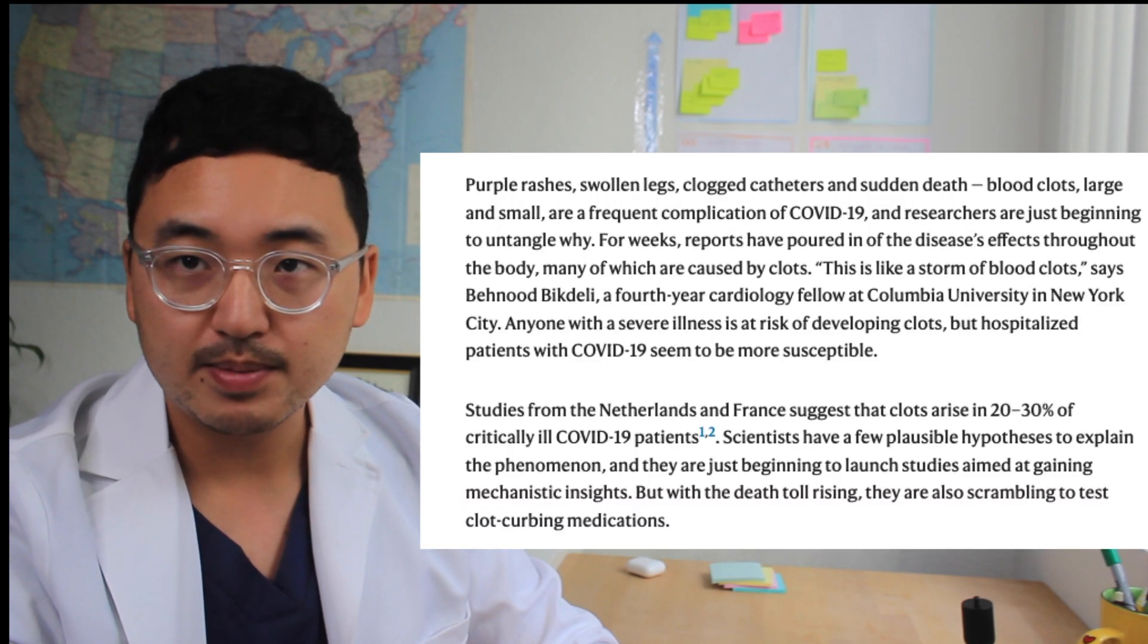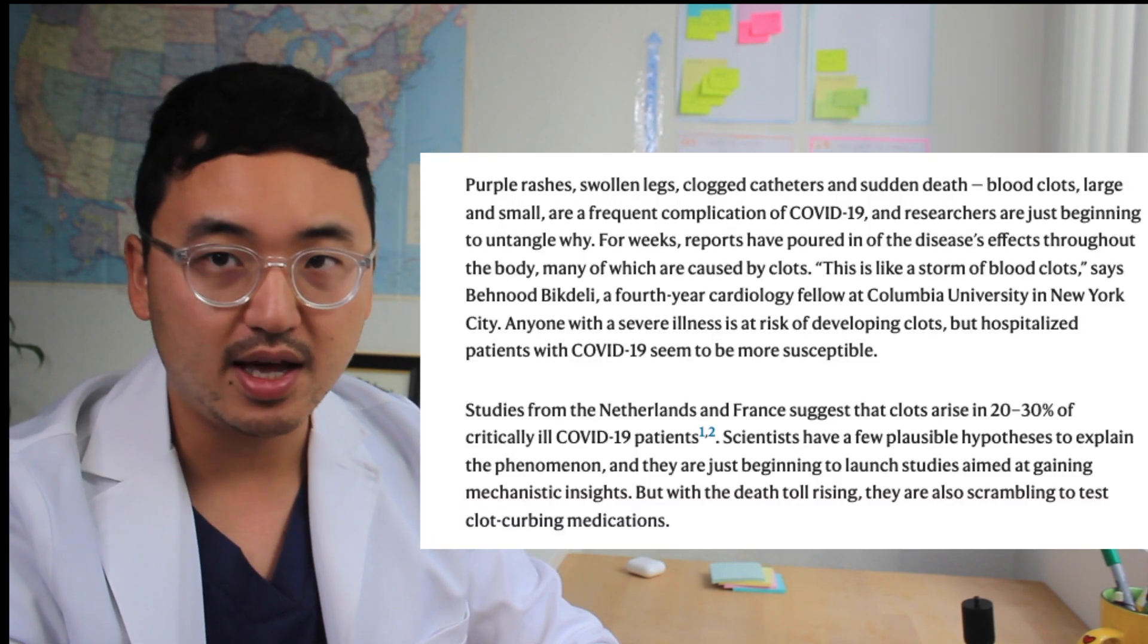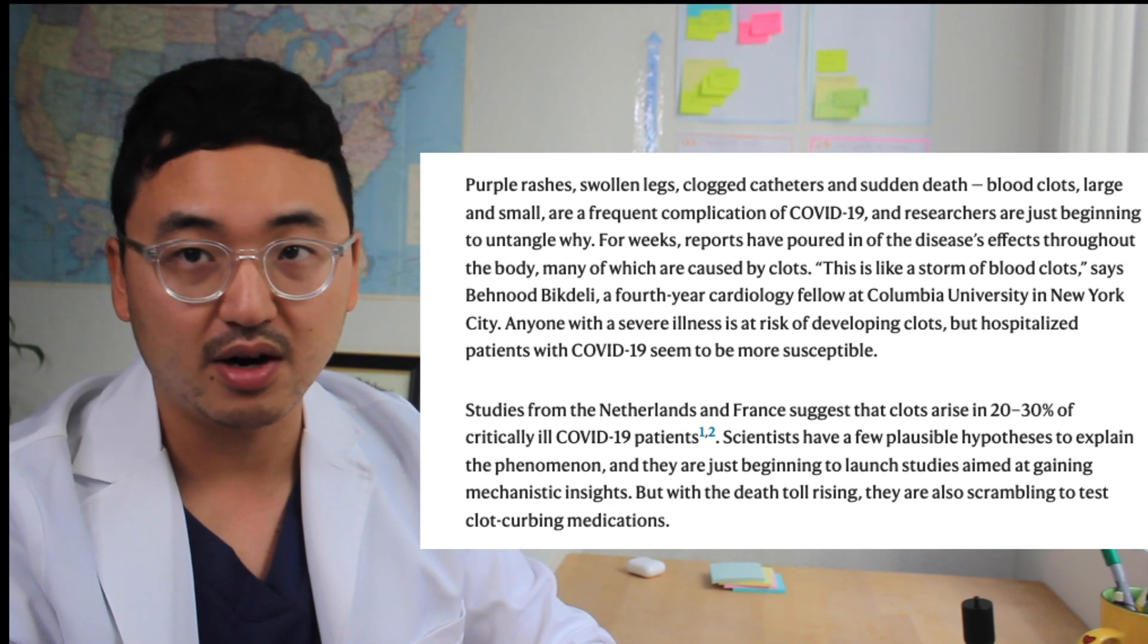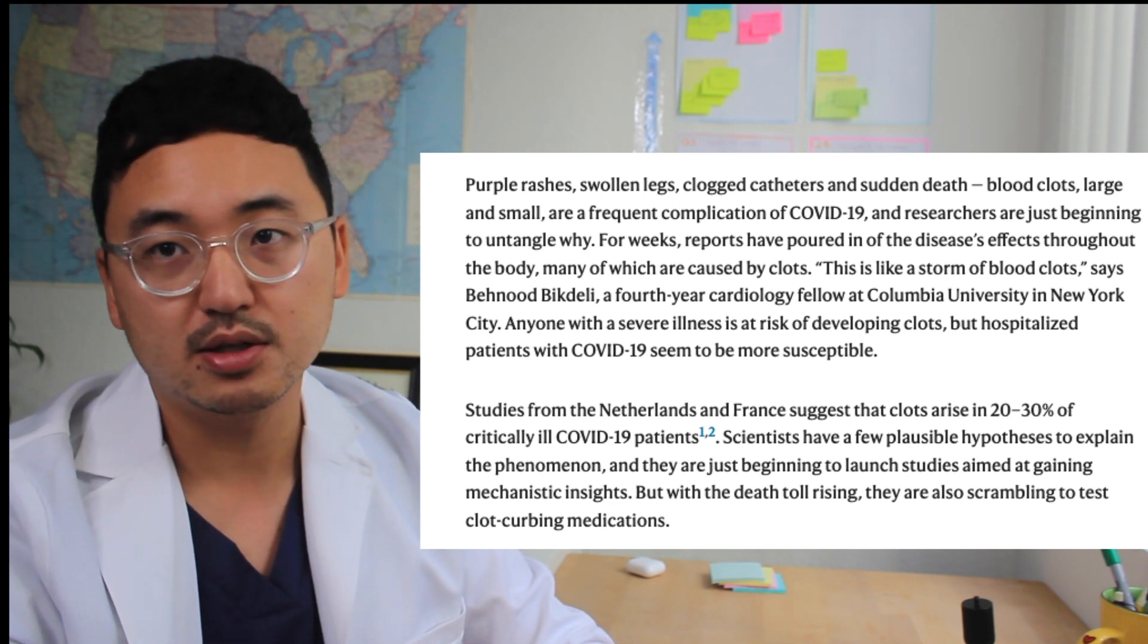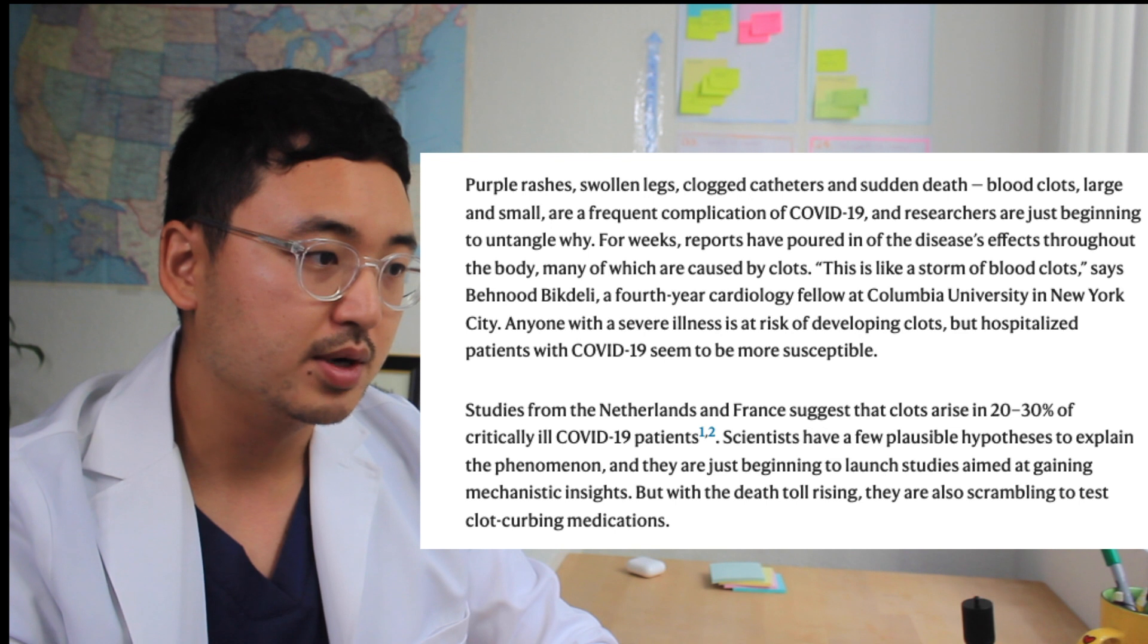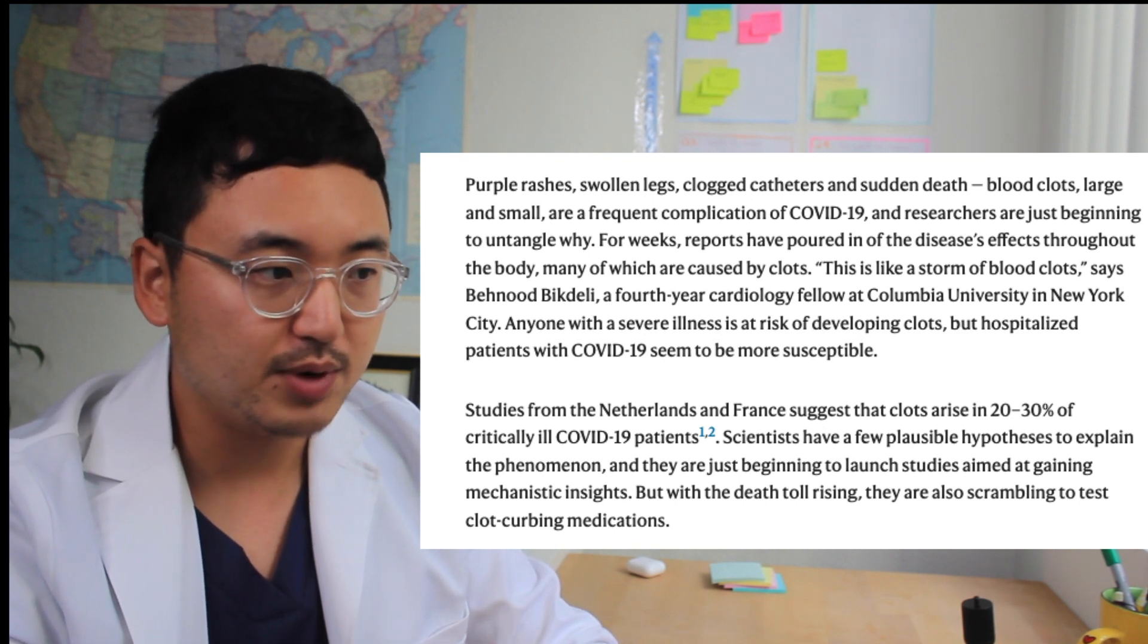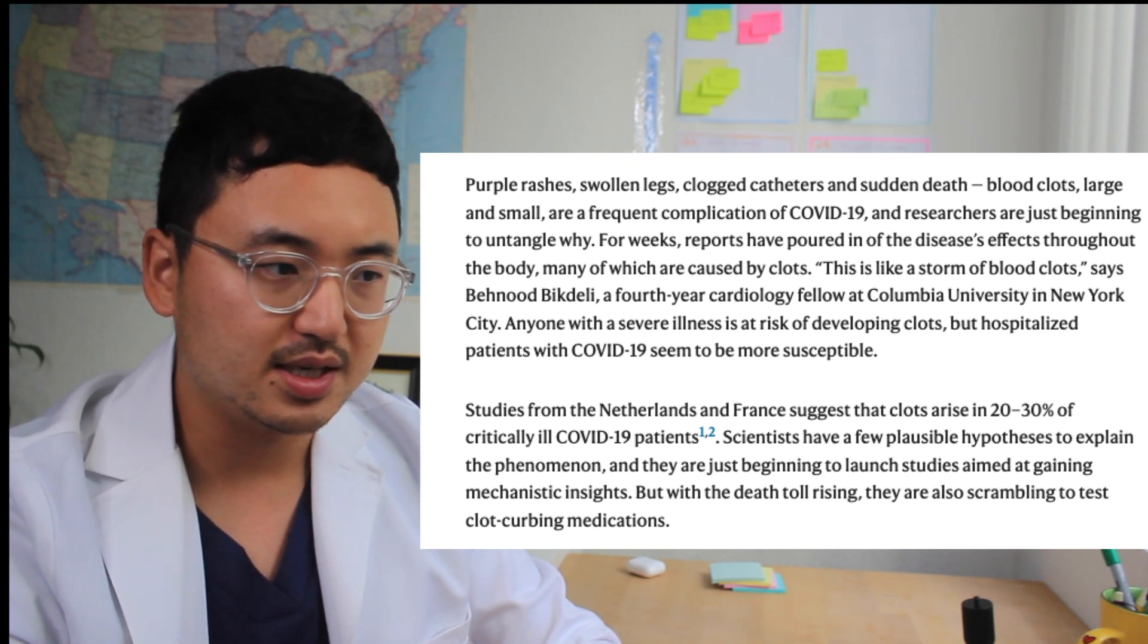Coronavirus blood clot mystery intensifies. A lot of symptoms that coronavirus has, like sudden death, and people just falling on the street because they're not having enough oxygen. They believe it has a lot to do with blood clots. That's why we see purple rash, swollen legs, or sudden deaths like that.